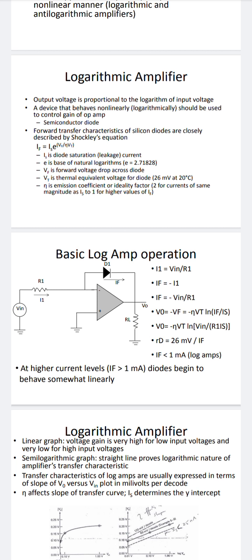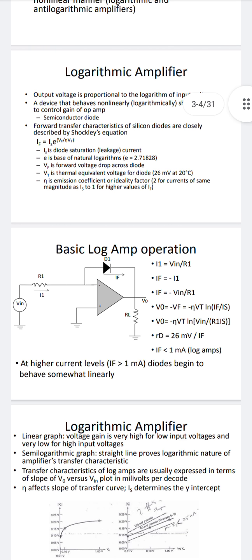In the logarithmic amplifier derivation, using Ohm's law, I1 equals V-in divided by R1. The feedback current I_F equals minus V-in upon R1. The output voltage V0 equals minus V_F, which equals minus eta times V_T times the natural log of I_F divided by I_S. Substituting, V0 equals minus eta times V_T times ln of (V-in divided by R1 times I_S). The dynamic resistance R_D equals 26 mV divided by I_F.